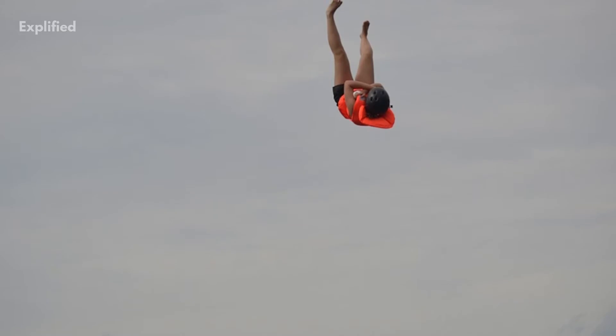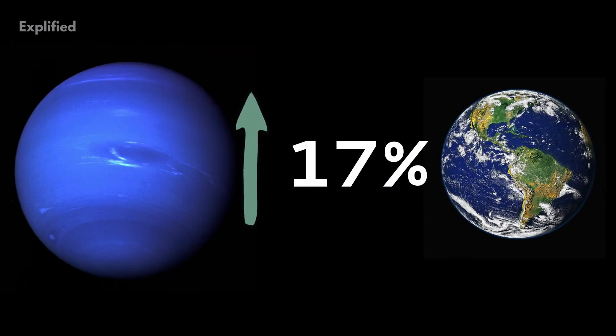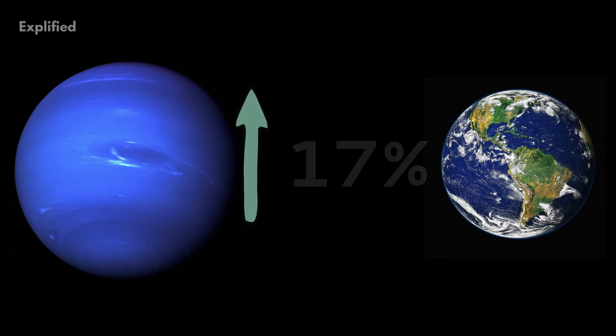That means if you stand on Neptune's surface, it would keep pulling you down to its core, if it exists. The gravity of Neptune is only 17 percent stronger than that of Earth, the closest of any planet in the solar system.